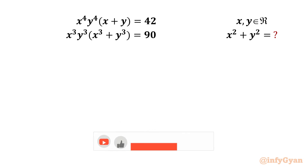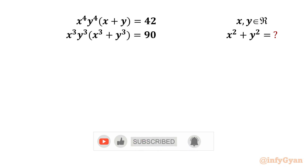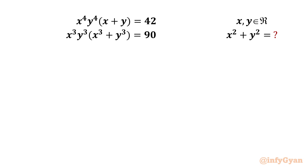Hello everyone, welcome back to Infigyan. In this video we are going to solve one very interesting question from system of equations — finding the expression value x² + y², given that x and y belong to real numbers, with known equations: x⁴·y⁴·(x+y) = 42 and x³·y³·(x³+y³) = 90. Let us get started by considering this as equation 1 and this as equation 2.